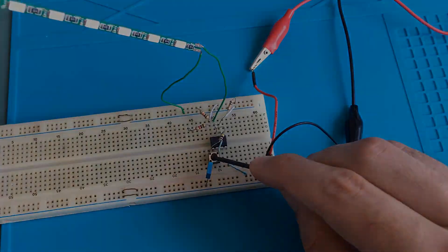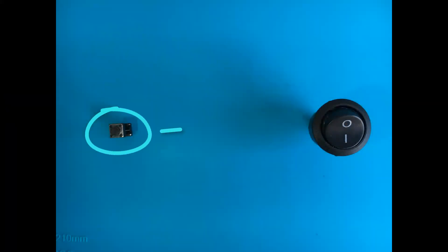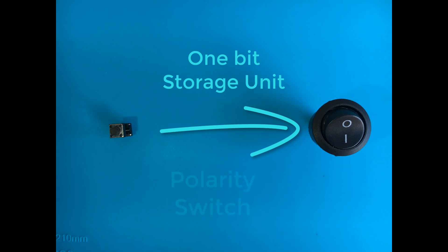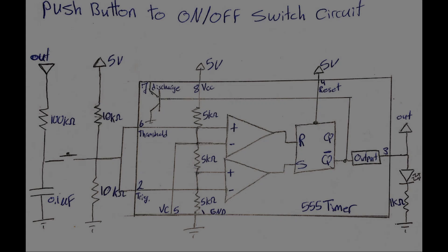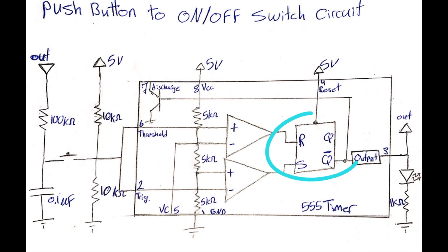In order to make a push button act as an on-off switch, we need something that stores the state of the switch and switches polarity once a push button is pressed. In this case, the first thing that may come to your mind is a latch circuit, which exists in the 555 timer IC.